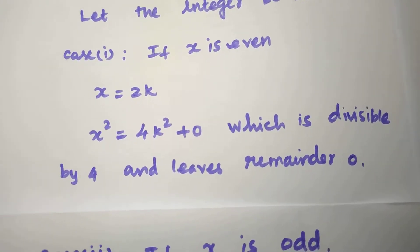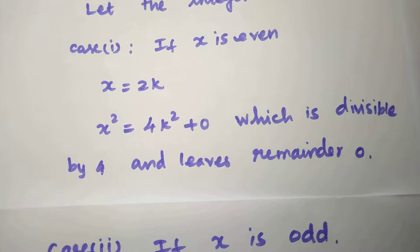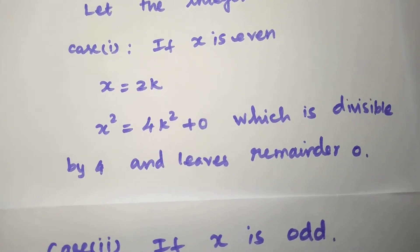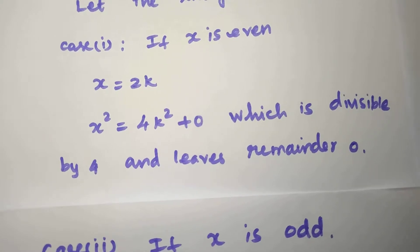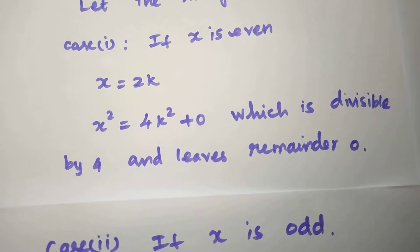The square of the number is x². So x² = (2k)² = 4k². Now 4k² is divisible by 4, plus 0, which is divisible by 4 and leaves the remainder 0.